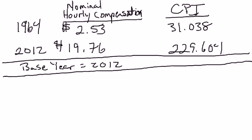It's useful in some contexts, and in this context it's the right price level to use. But there might be other contexts where you want to use a different measure of average price of goods and services. What we're trying to do is calculate the real value of hourly compensation for production non-supervisory workers inside the United States. The nominal value of hourly compensation was $2.53 in 1964, and that rose all the way up to $19.76 in 2012.